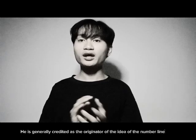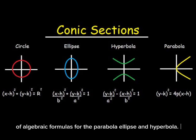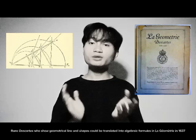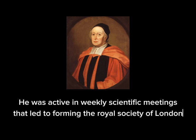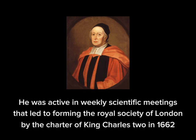He is generally credited as the originator of the idea of the number line. In 1656, in De Sectionibus Conicis (the conic sections), Wallis published his discovery of algebraic formulas for the parabola, ellipse, and hyperbola. This was a significant advance on the groundbreaking work of Descartes, which showed how geometrical lines and shapes could be translated into algebraic formulas in La Géométrie in 1637. In his prominent work, Treatise on the Conic Sections, the symbol of infinity was introduced. He was also active in weekly scientific meetings that led to the forming of the Royal Society of London by the Charter of King Charles II in 1662.